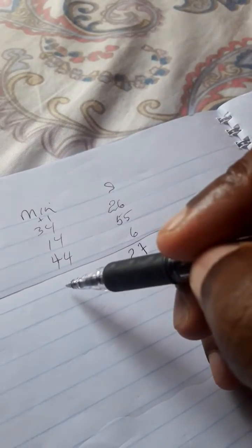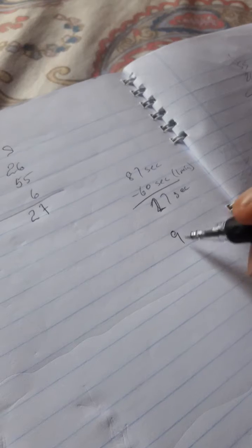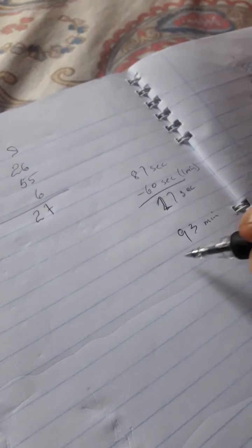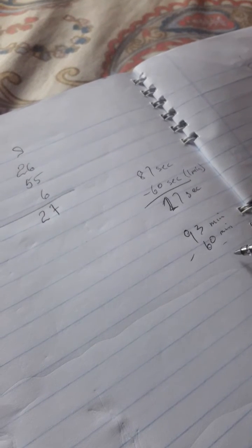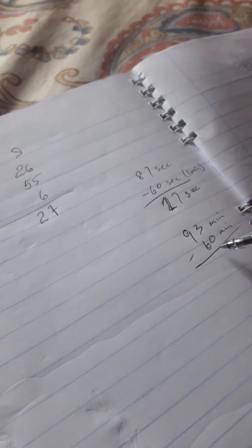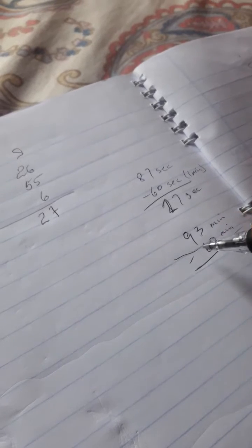Now, should I put 93 minutes here? No, because 93 minutes, out of it, I can actually get 60 minutes. And that 60 minutes is the same thing as an hour. So this is actually one hour.